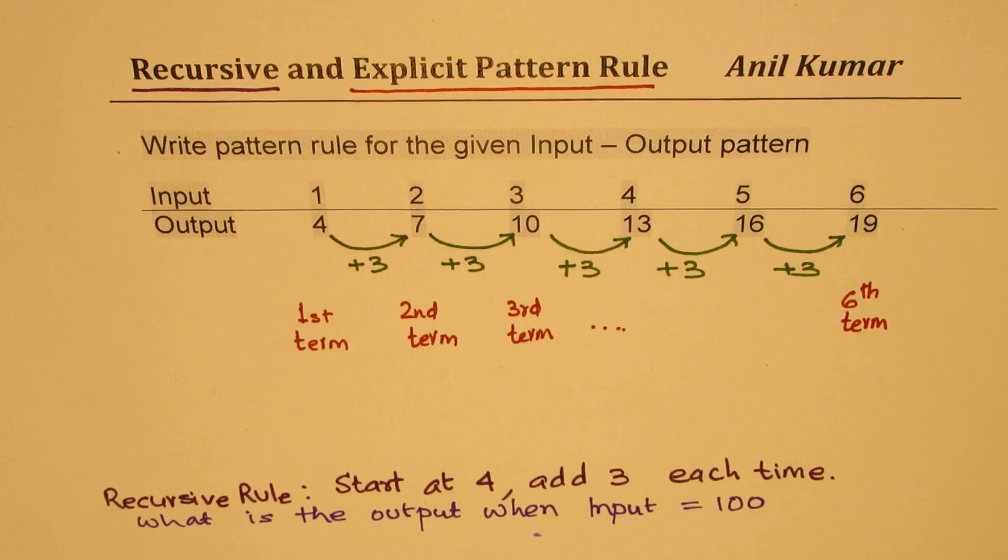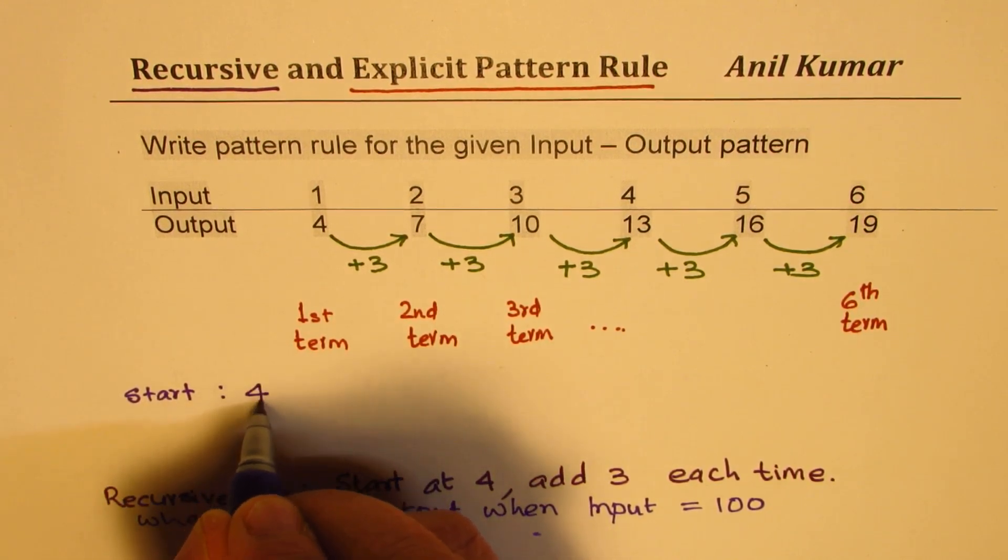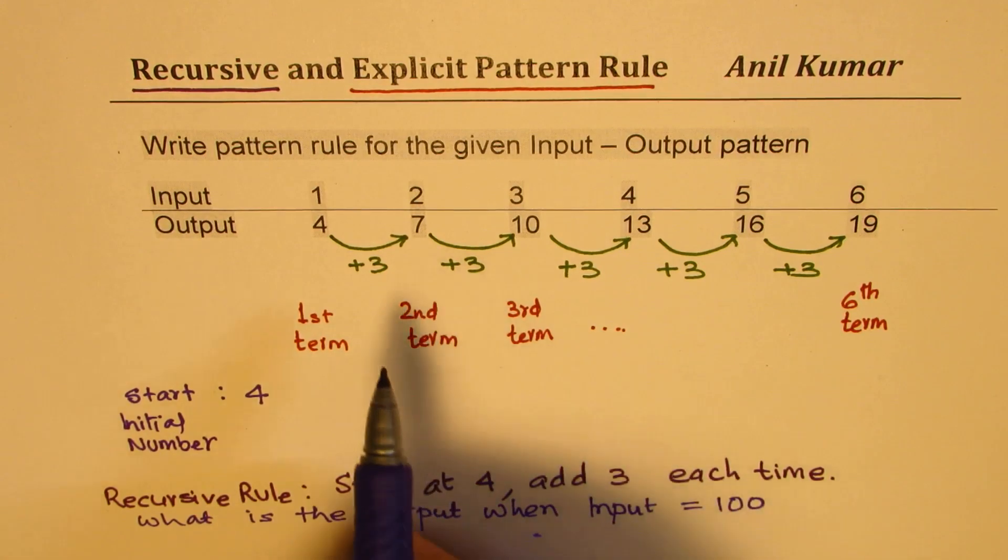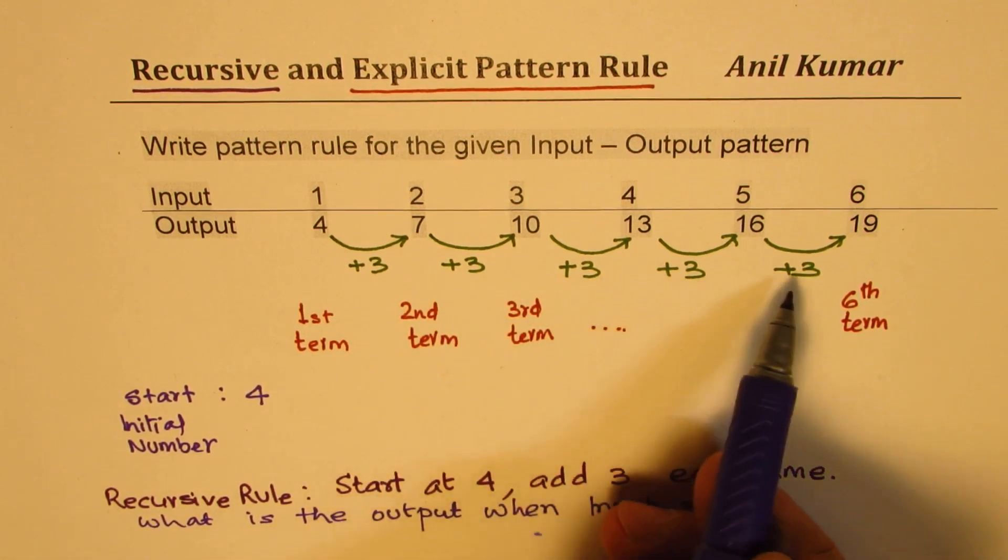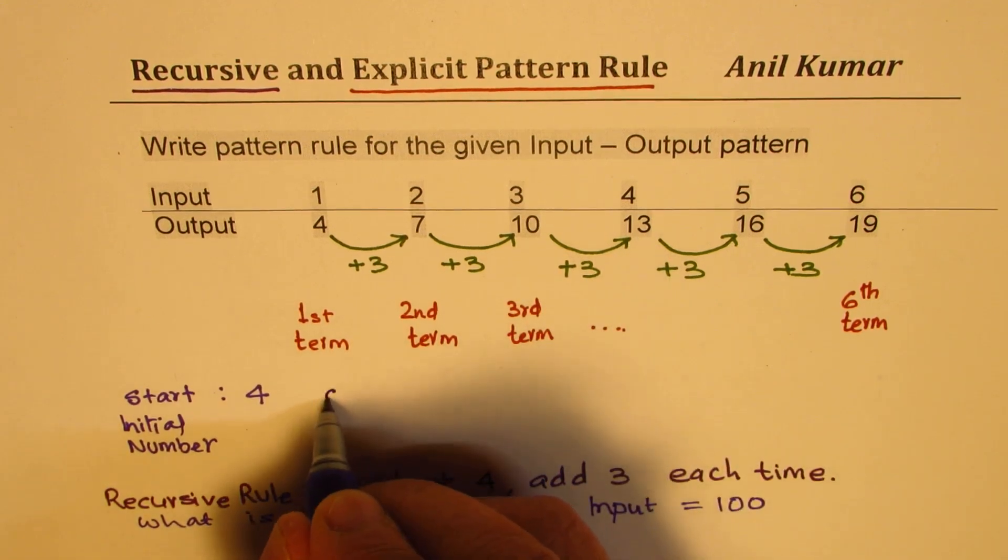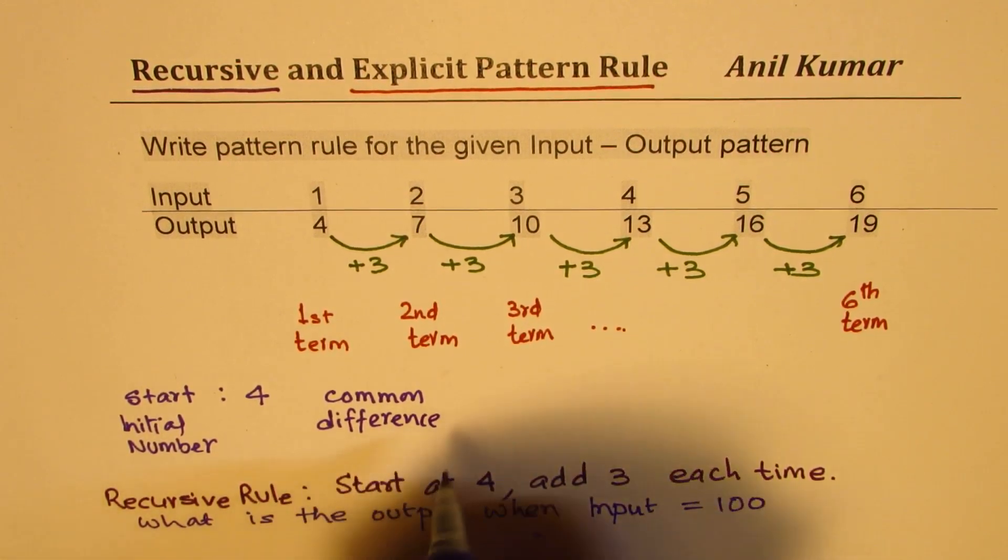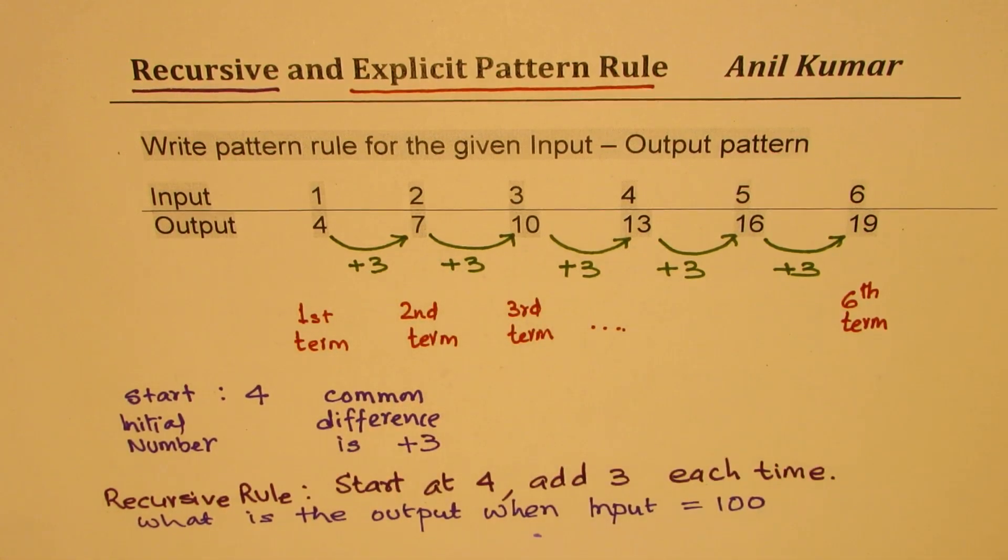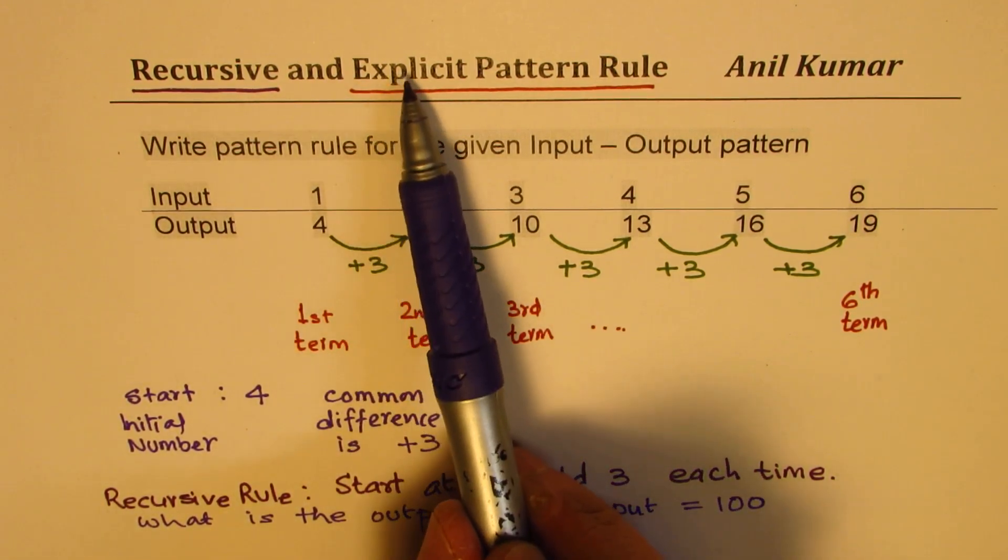Now in this particular pattern what do you notice? We notice that the initial number or the starting number is 4. This is also called initial number. And between any two numbers there is a difference of 3. Now since this difference is constant and it is common for all we say common difference is 3. So we'll write plus 3 since we are adding 3 each time. Now with the help of our starting number and common difference we can actually come up with the explicit pattern rule.